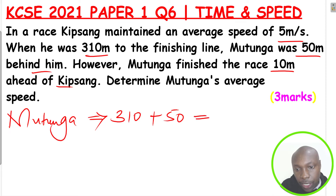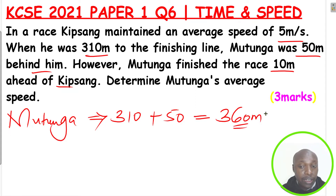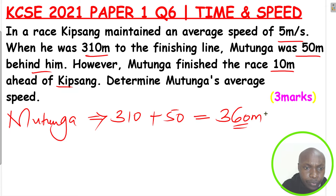For Mutunga, he had to cover 310 plus 50 meters. And therefore, in total, he had to run a distance of 360 meters to finish.